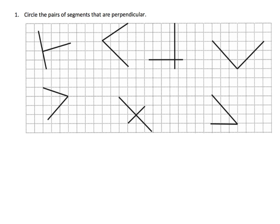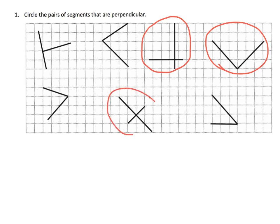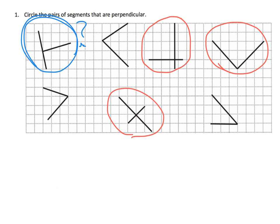Here we're going to circle the line segments that appear to be perpendicular. Since we're doing this informally, if your students have some disagreements that's okay, as long as they are using proper definitions and displaying a distinct understanding of what perpendicular line segments are. These definitely look like they are perpendicular. There might be some argument over this one — the rest are definitely not perpendicular. Remember, perpendicular is when two lines form 90 degree angles.